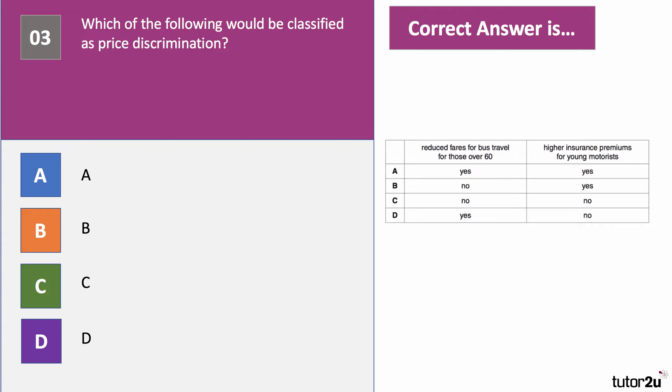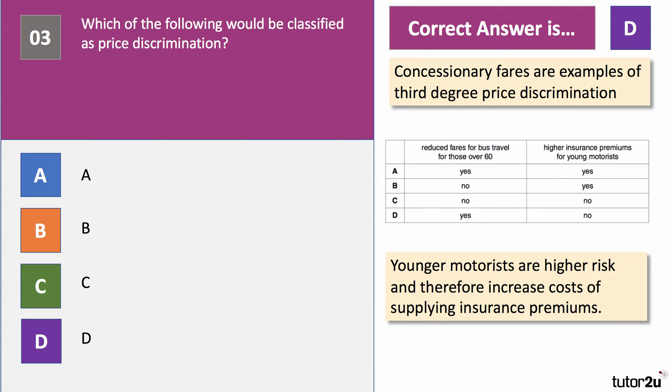Question three. Which of the following would be classified as price discrimination? Two examples here: bus fares and insurance premiums. The right answer to question three is D. Bus fares — yes, that's price discrimination. Concessionary fares to older people is third degree price discrimination; they've got a more elastic demand. Higher insurance premiums for younger, less experienced motorists — no. Part of the reason for the increase in insurance premiums for that group is because they're a higher risk category with less experience behind the wheel, so the cost of supplying a premium is higher to the insurance company. Therefore it's not price discrimination. The answer is D.